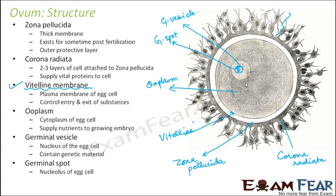The nucleolus is the dense portion present inside the nucleus. This is roughly the structure of the ovum. Layers like zona pellucida and corona radiata play a very important role because they provide protection and useful nutrients to the egg cell. Protecting the egg cell post-fertilization is also extremely important, because at that time it is the fertilized egg which will form a zygote, which will develop into an embryo, and then into a new organism altogether.